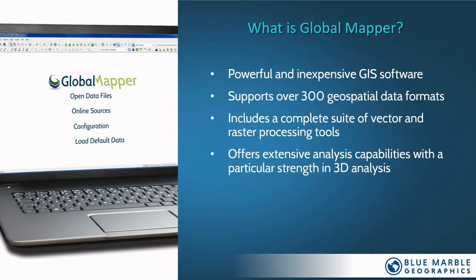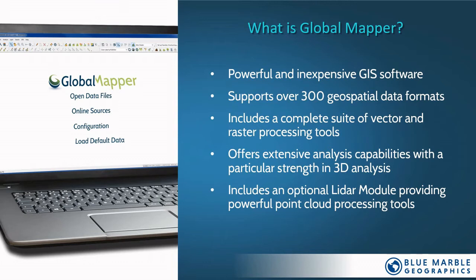Global Mapper has a particular strength in 3D analysis, certainly supporting and processing point cloud data. Beyond that, 3D analysis for things like watershed delineation, viewshed analysis, and we'll see some of those 3D tools in this demonstration. There is an optional add-on called the LiDAR module, which we recommend for automatic point cloud classification and feature extraction from a point cloud. The newest tool in this module is our pixels to points tool, which allows you to generate a point cloud from overlapping images — typically collected by a drone — to generate 3D data from those source images.